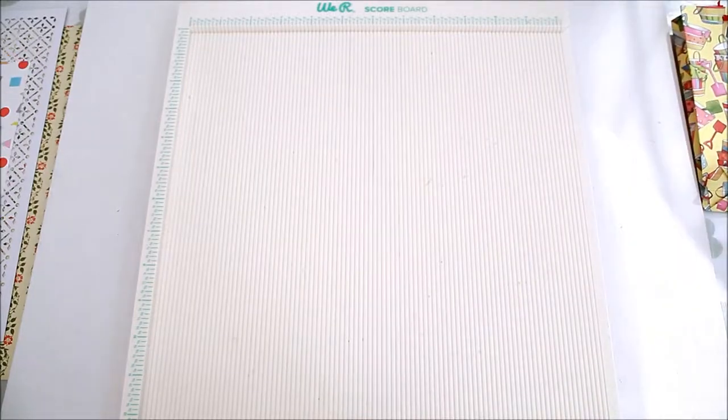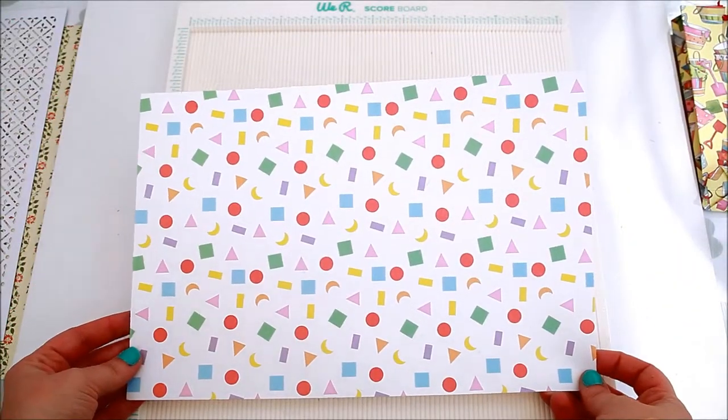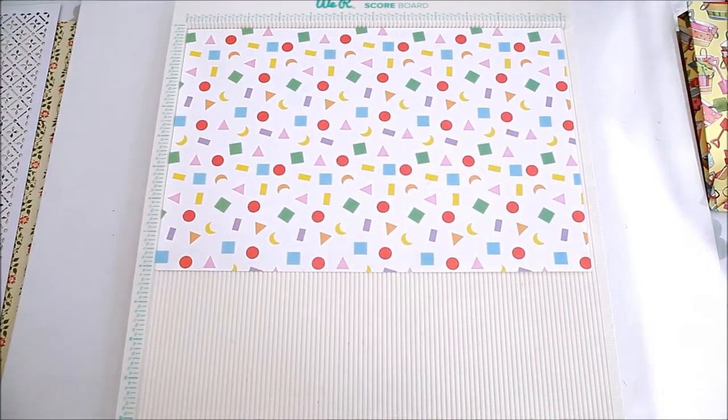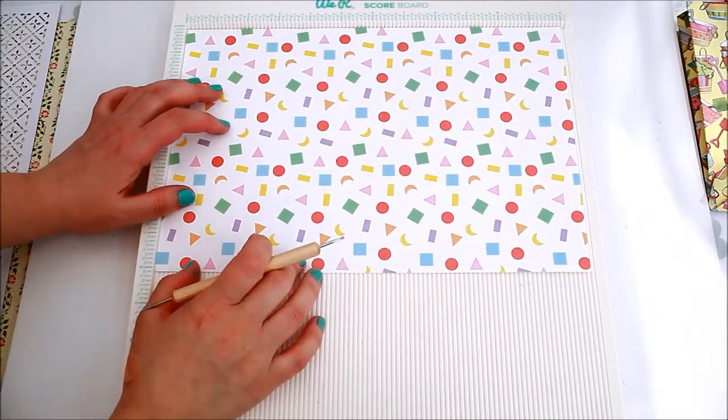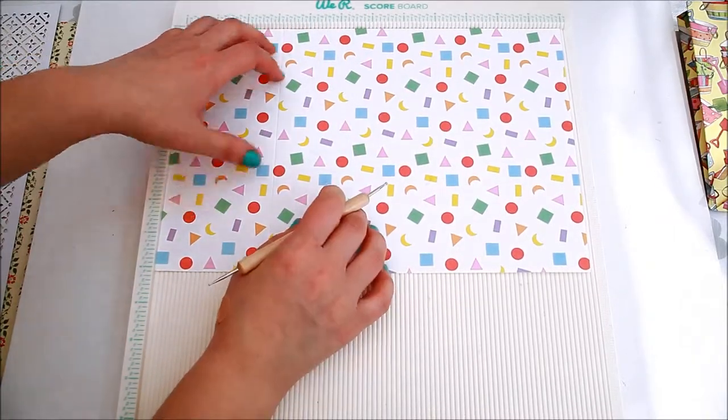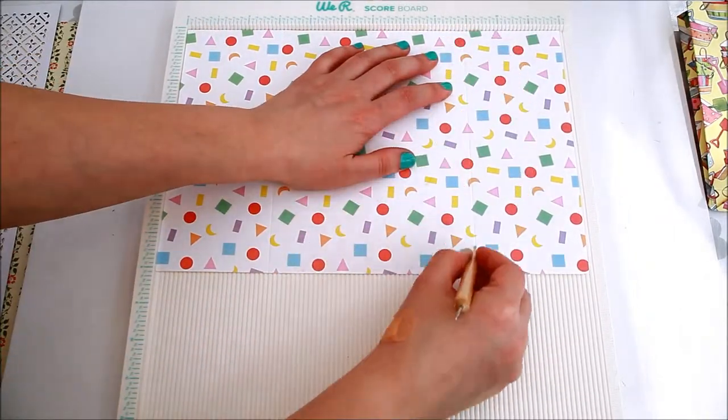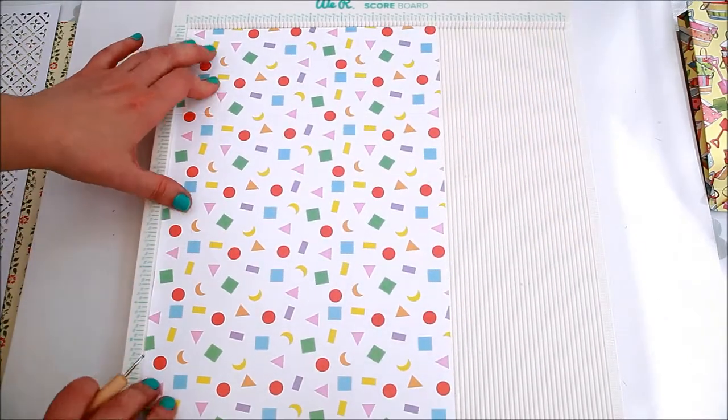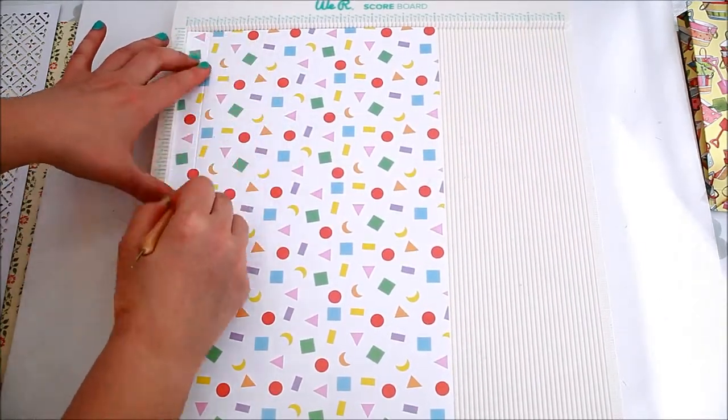Take a 12 by 12 inches sheet of paper and trim it to 8 by 12 inches. Then score on the long side at 3 1/8 of an inch and 8 7/8 inches. Then on the short side at 3 1/4 of an inch.